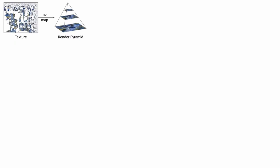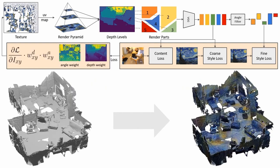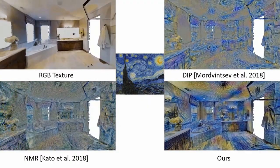We sample the texture at multiple resolutions, resulting in a render pyramid of the current pose. Using depth, we divide the image into parts. Next, we encode the parts and remove features that are observed from small grazing angles. Finally, we scale per-pixel gradients with angle and depth weights during backpropagation.